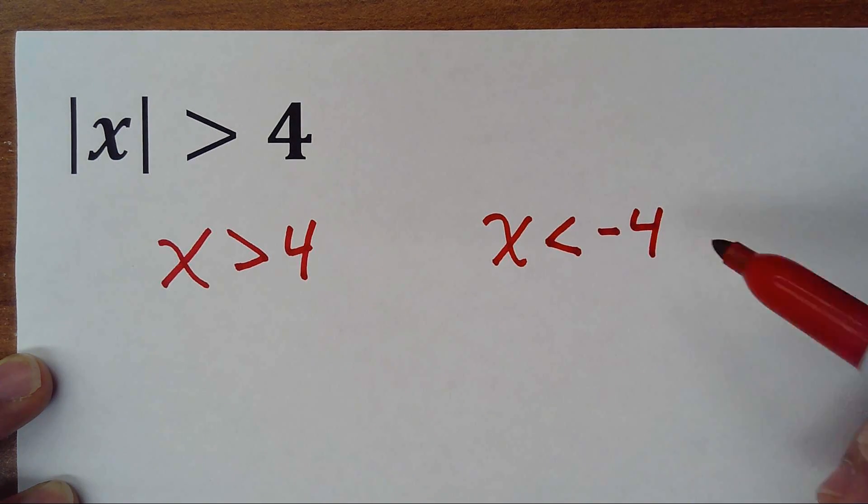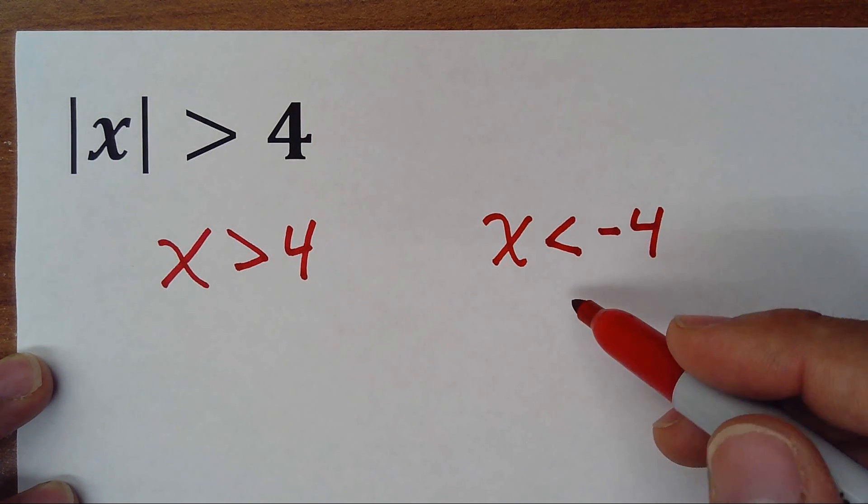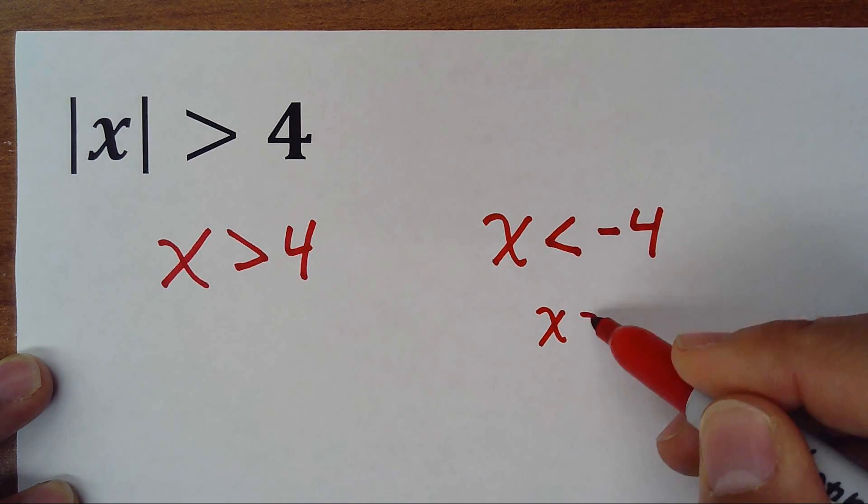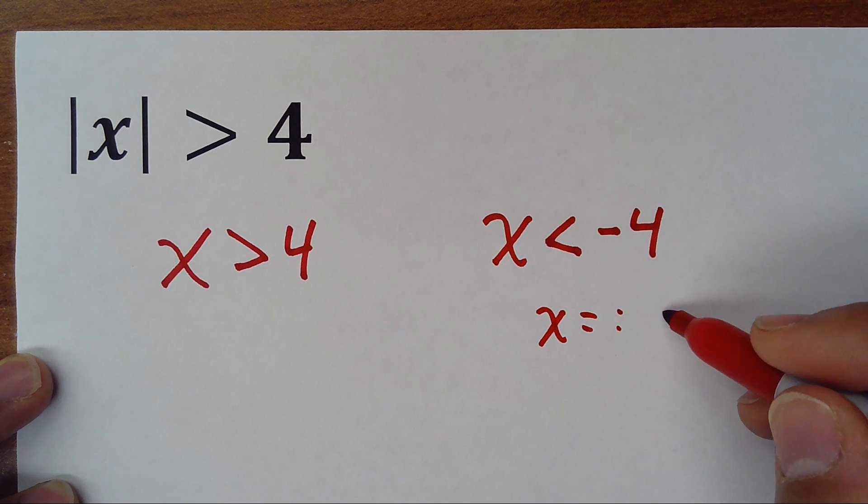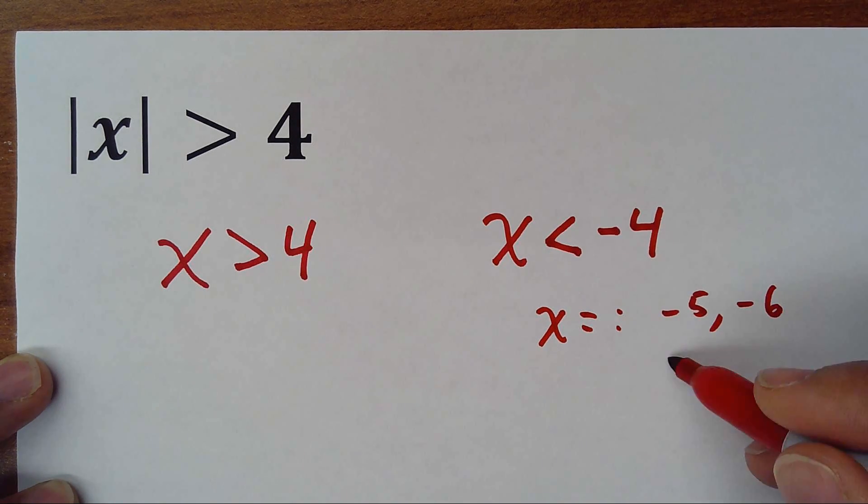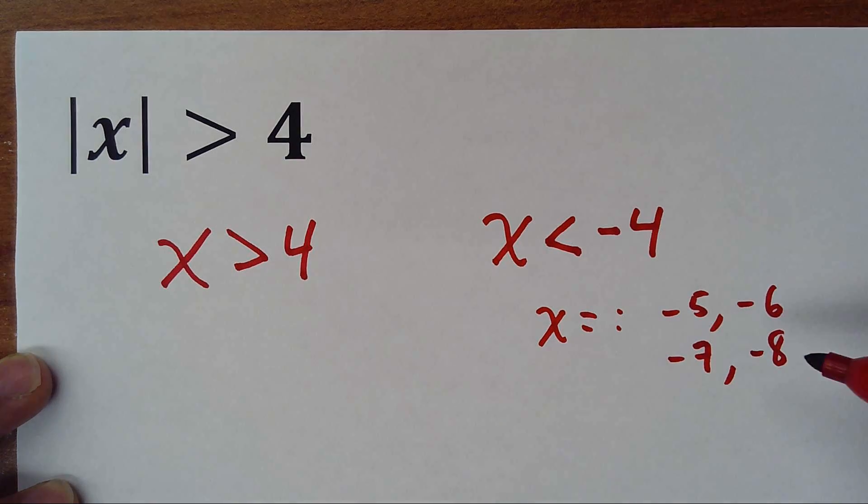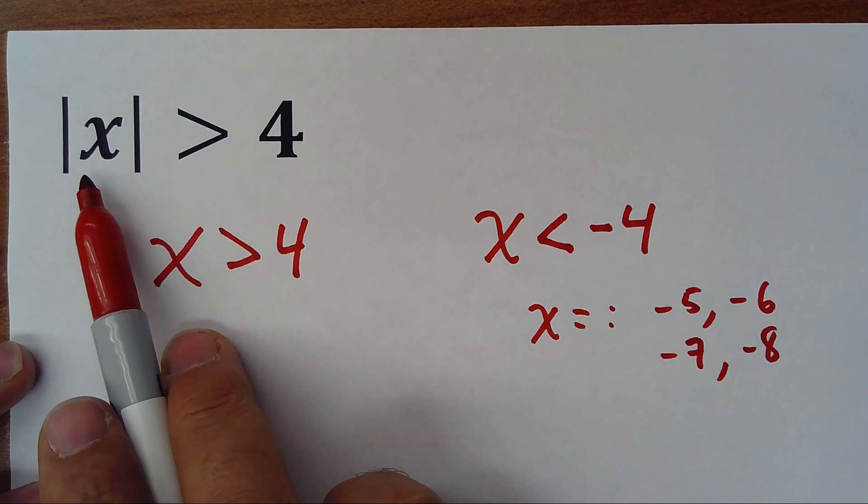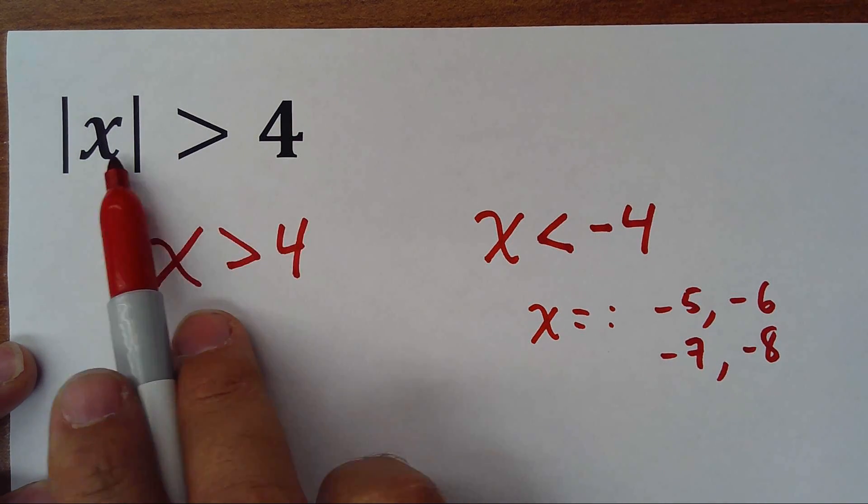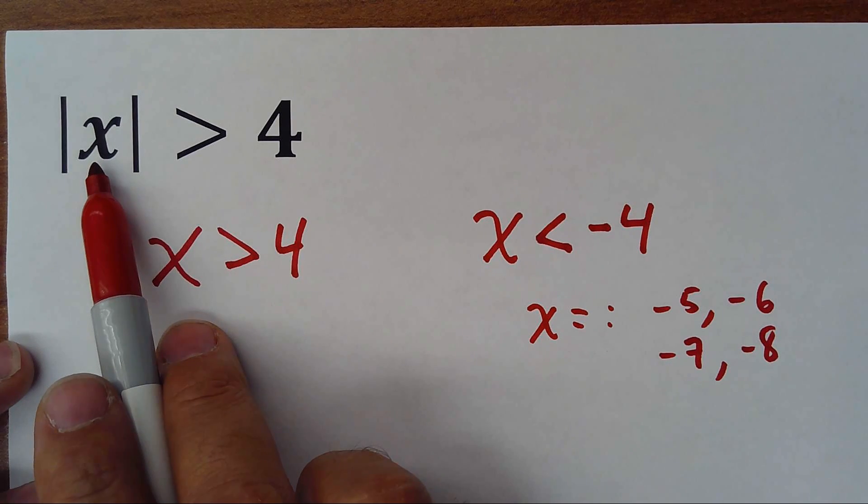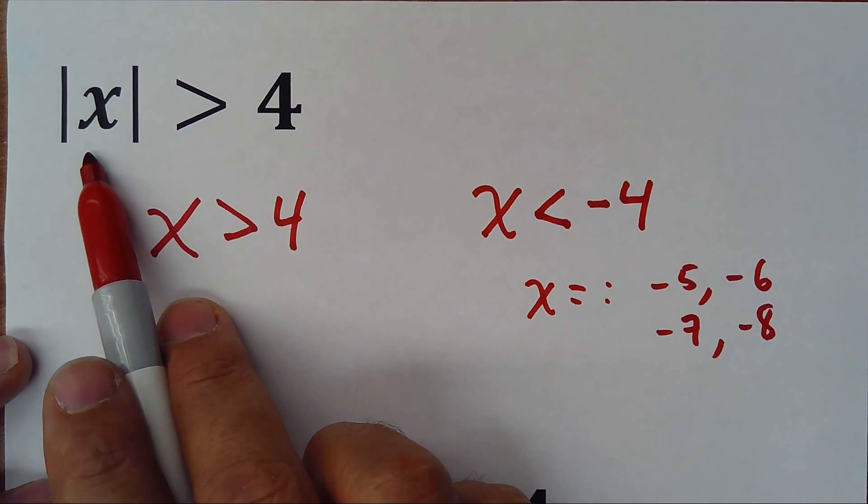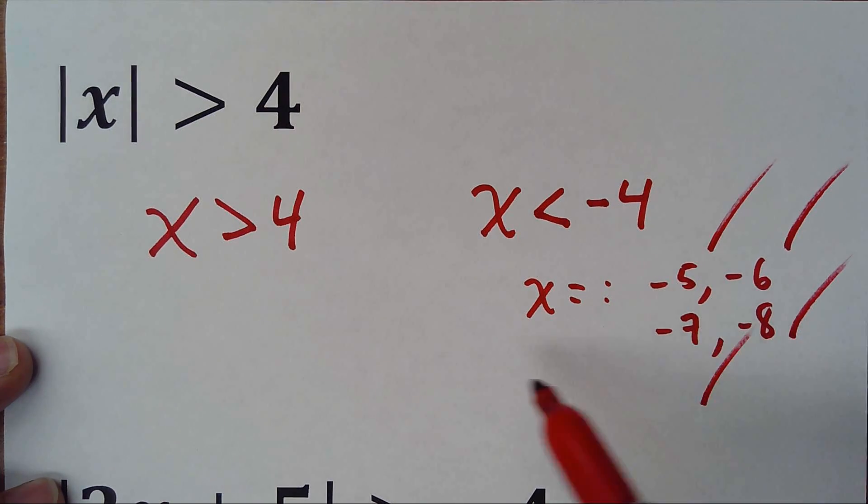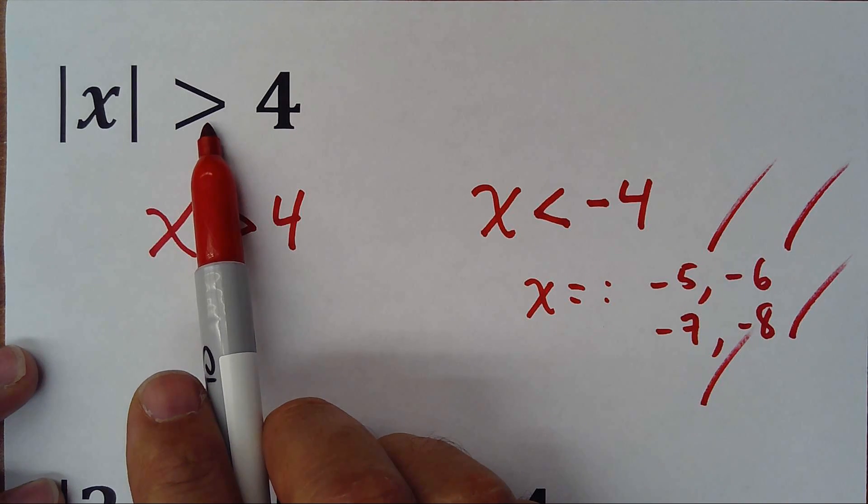Why? Because if x is, for example, let's suppose x equals negative 5, negative 6, negative 7, negative 8, for all those values here in the absolute value, for example absolute value of negative 7 is greater than 4, that's true, that's correct. If it's absolute value of negative 8, that's correct too. So all these numbers are possible solutions for this inequality.